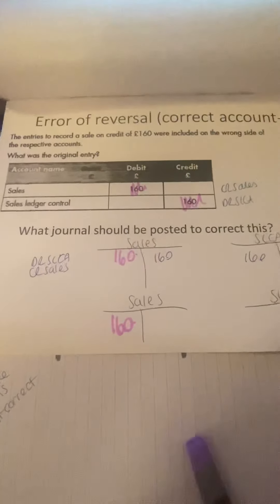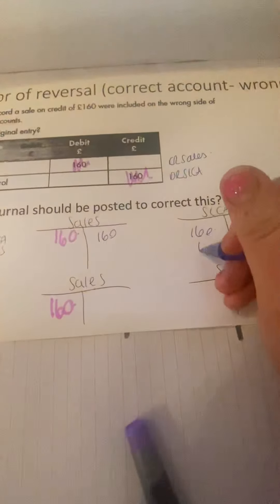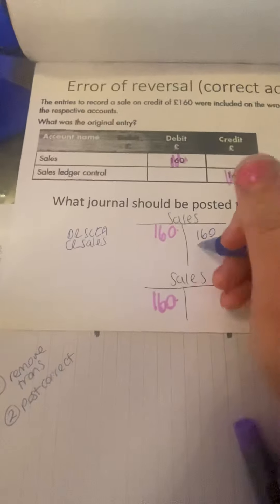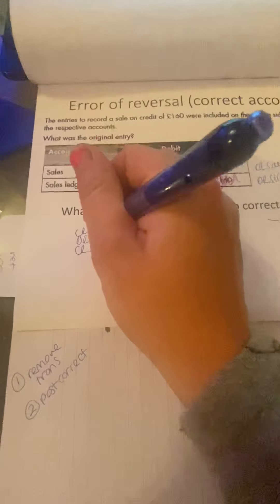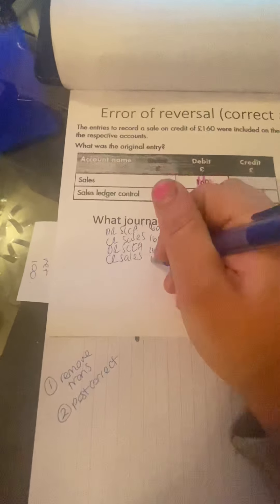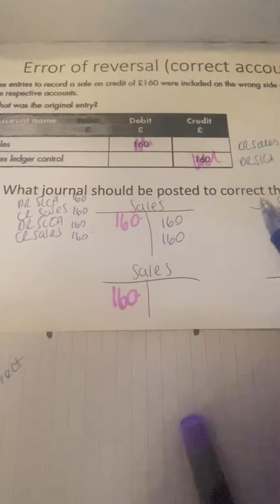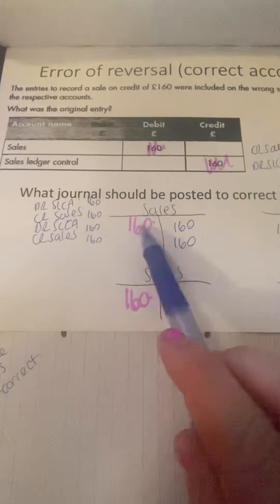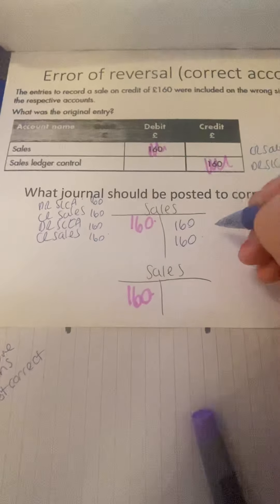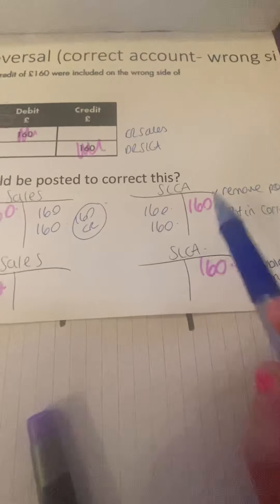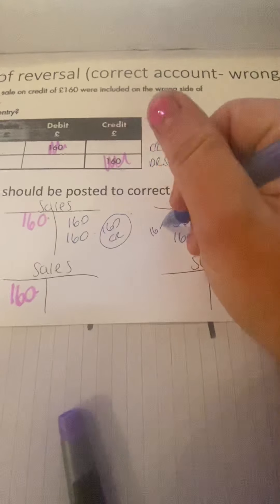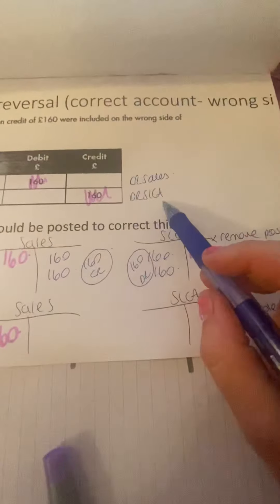And then to put in the correct one, we would debit sales ledger control account, credit sales - all with £160. If you were to look at these accounts now, are you happy that one and that one cancel each other out? So it would end up as £160 on the credit side. And if you look at this one, that one and that one would cancel each other out, so you would end up with £160 on the debit side, which is what we wanted.